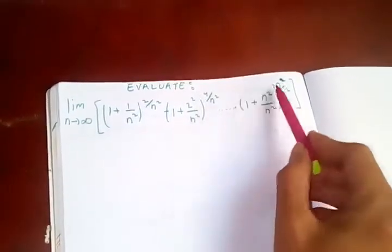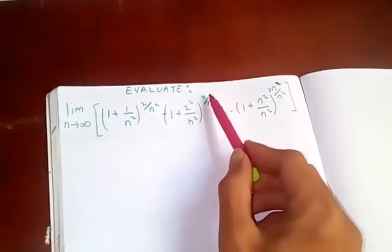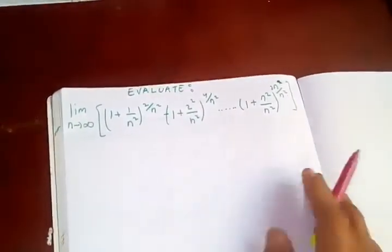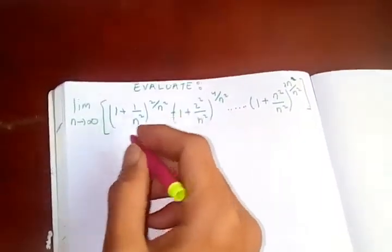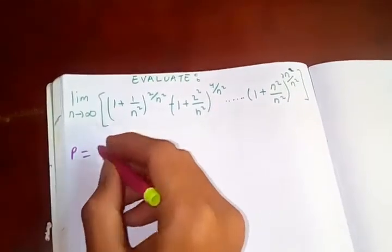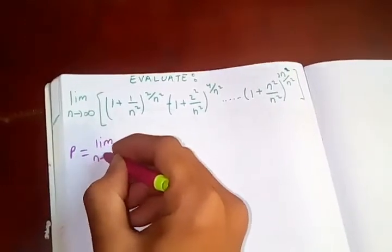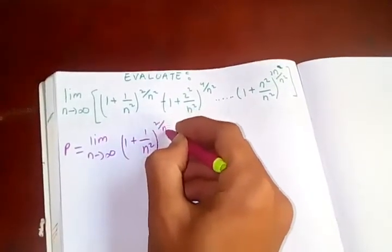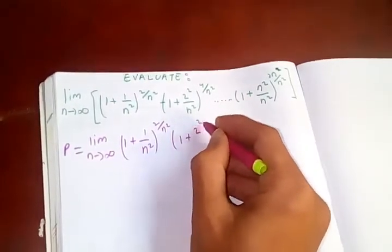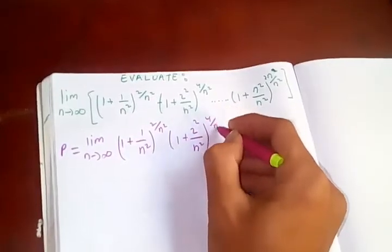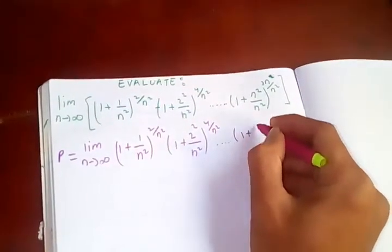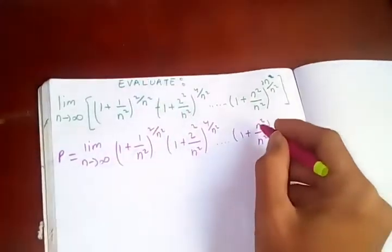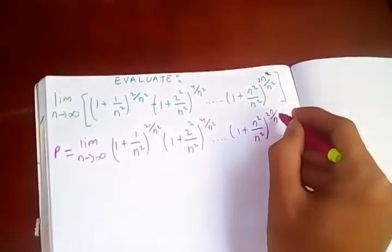Since we have powers here, I want to bring them down. Since these are all products, we can take the logarithm. Let's call this limit p. So p equals the limit as n tends to infinity of (1 + 1/n²)^(2/n²) times (1 + 2²/n²)^(4/n²), and so on up to n times. Note that this 2n and this n are not equal — this n is constant while this n changes, giving 2n/n².